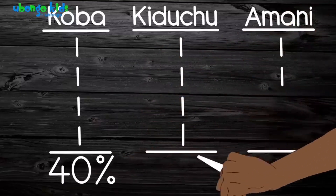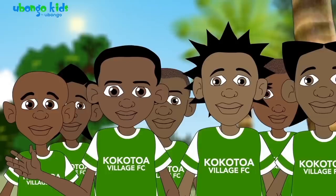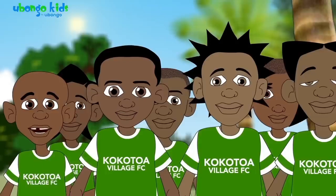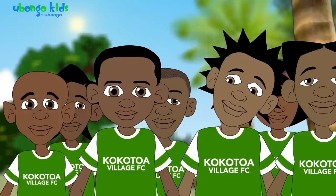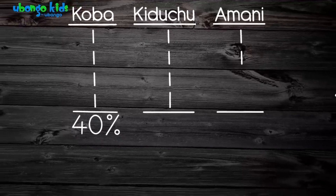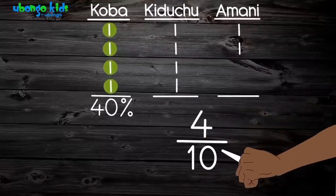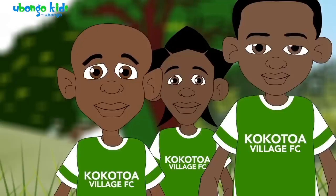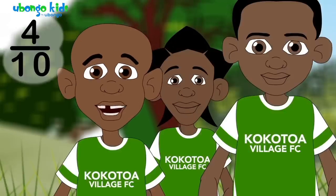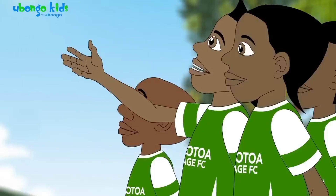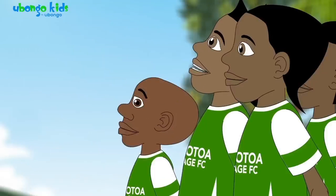Koba got 40%. Wait — how can he get 40 when there aren't even 20 of us? Kibena, you're doing it all wrong. What did the 40 come from? There are only 10 of us. Listen, Baraka — results of elections are often reported using percentages. For what? Look, Baraka, four of us chose Koba. That means four out of ten chose Koba, right? Hmm, four out of ten. Yeah, that's right. But where did the 40 come from? Come on, guys — is this a math lesson or a football election?